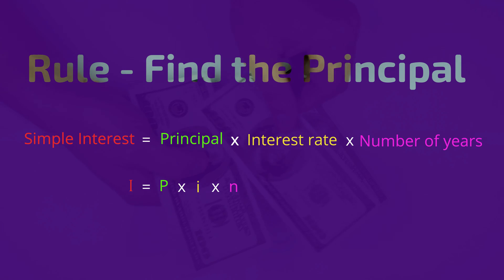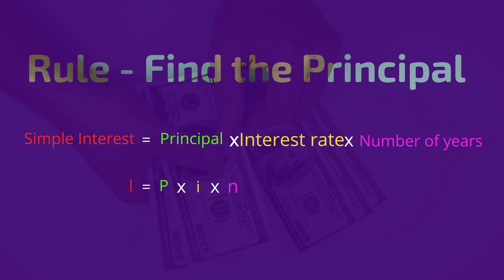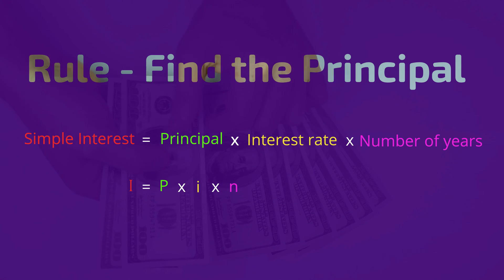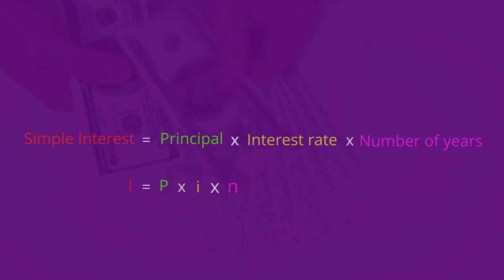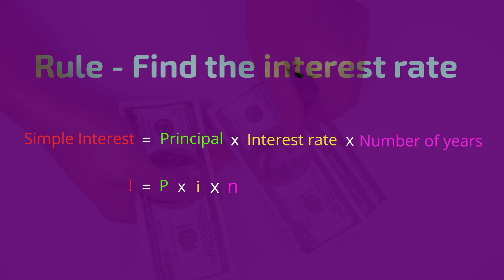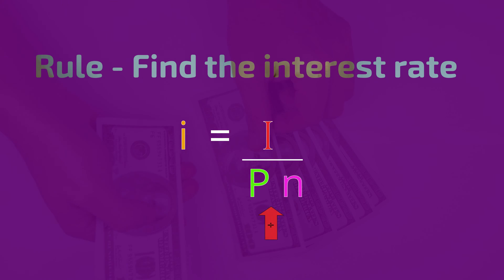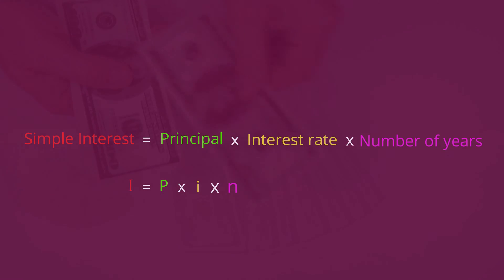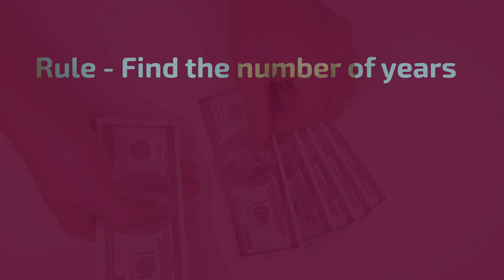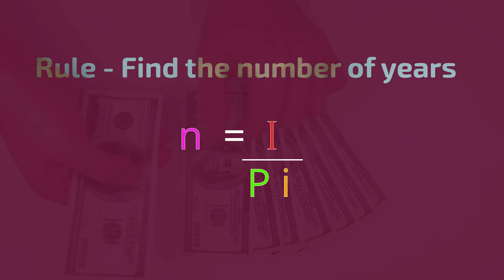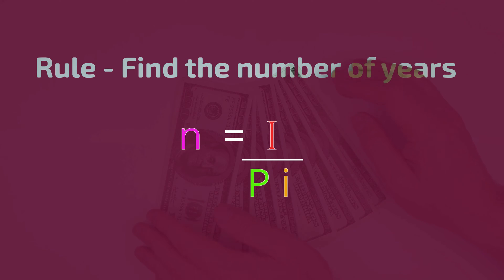Let's rearrange the PIN rule to find P. In the PIN rule, P is multiplied by small i and multiplied by n. So when we rearrange to find P we will do the opposite operations — we will divide by small i and divide by n. So P equals big I divided by small i and n. P equals big I divided by the other two. In the same way, when we rearrange the PIN rule to find small i, small i equals big I divided by the other two. For the last rule, we rearrange the PIN rule to find n. If you said n equals big I divided by the other two, you're correct. Now here are examples of those four rules.